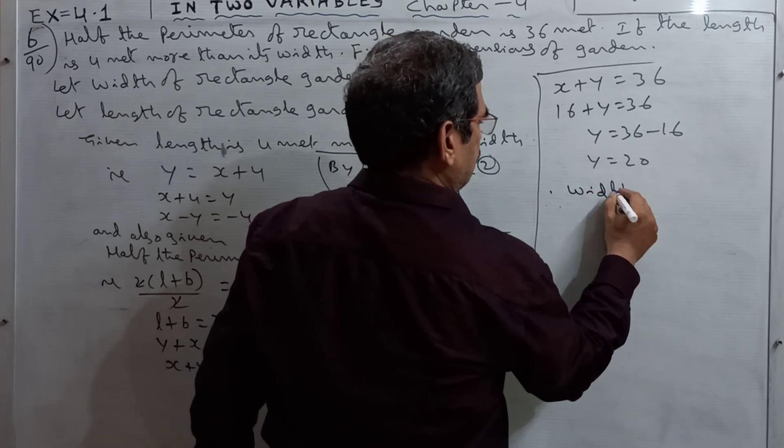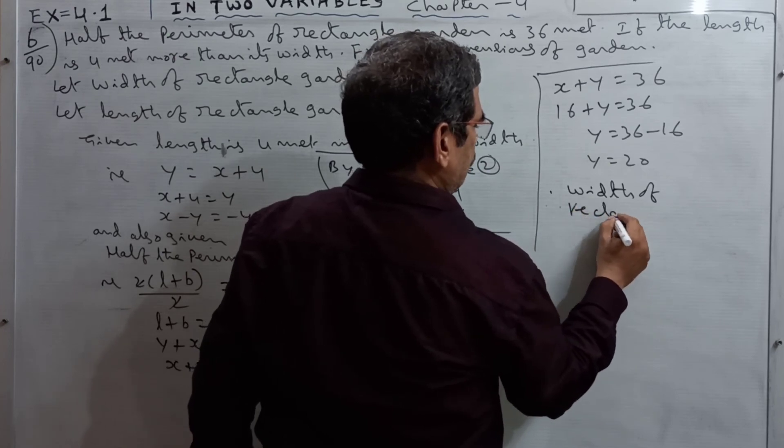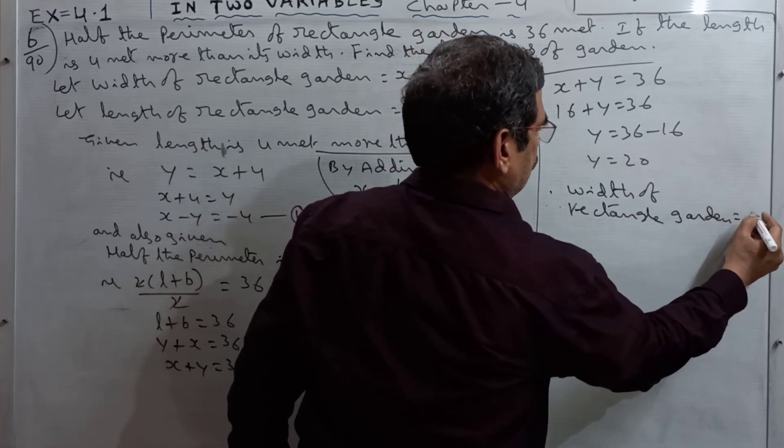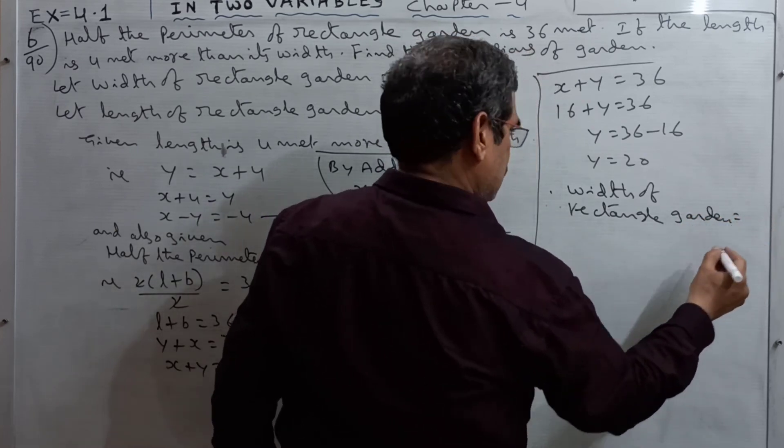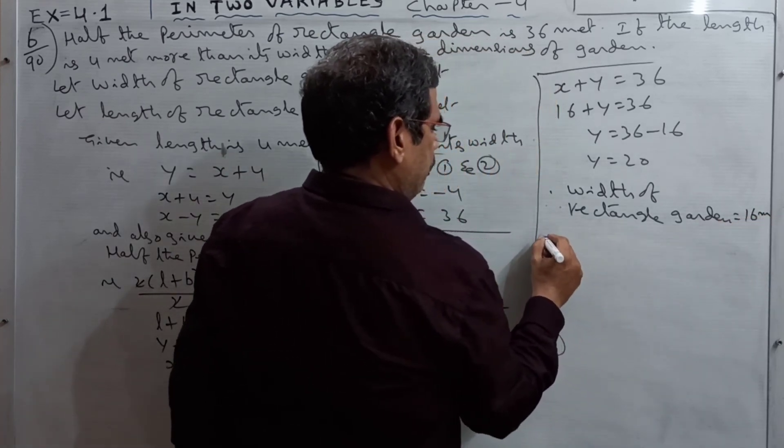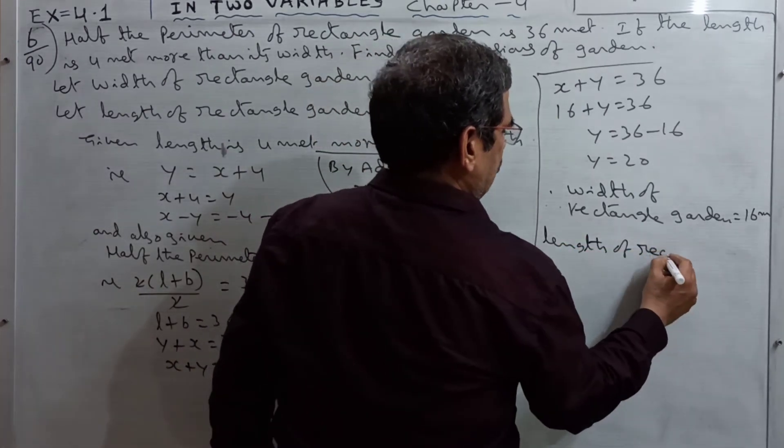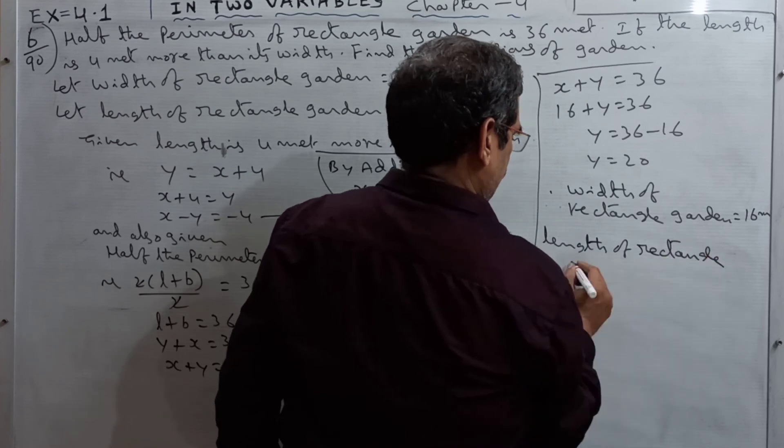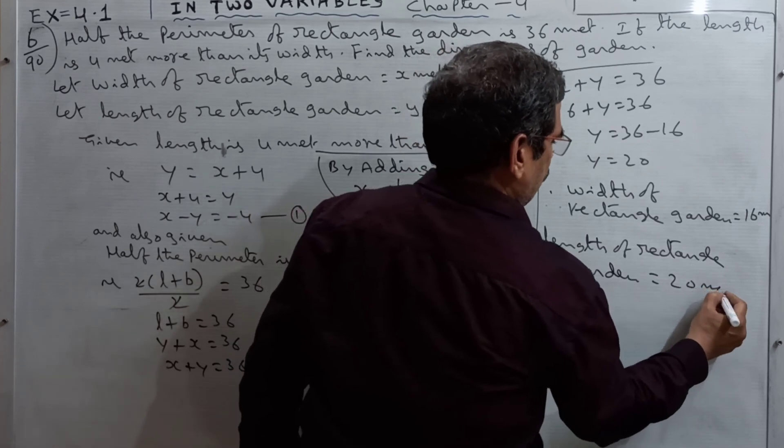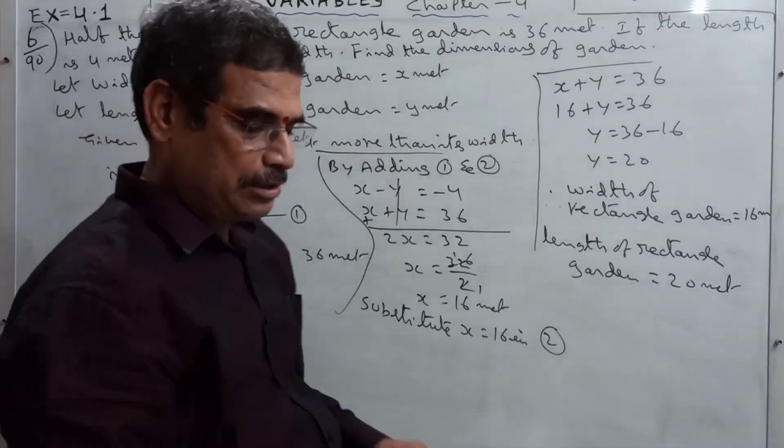Therefore, width of the rectangular garden is equal to 16 meters. In the same way, length of the rectangular garden is equal to 20 meters.